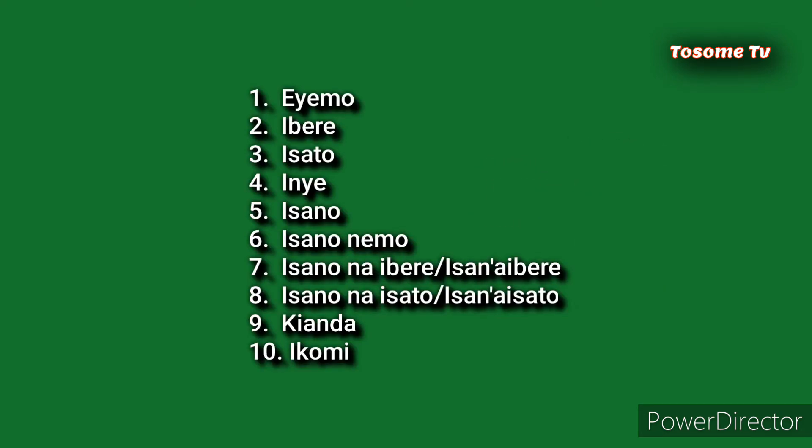One, we say EYEMO. EYEMO. Two, we say IVERE. Three, ISATO. ISATO. Four, INYE. INYE, that is four. INYE. Five, ISANO. ISANO.